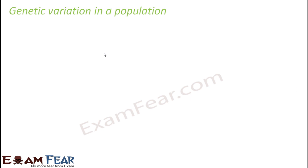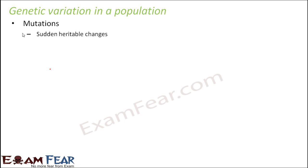First, let's talk about genetic variation in a population. Genetic variation means any kind of variation in terms of genes — new genes being introduced into a population, genes being removed or lost, or sudden random changes in the genes of a population. Genetic variation can happen due to multiple factors. One factor is mutations — these are sudden heritable changes that happen on their own and get transmitted to future generations.